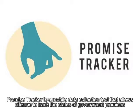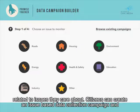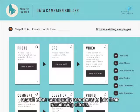Promise Tracker is a mobile data collection tool that allows citizens to track the status of government promises related to issues they care about. Citizens can create an issue-based data collection campaign and recruit other community members to join their monitoring efforts.